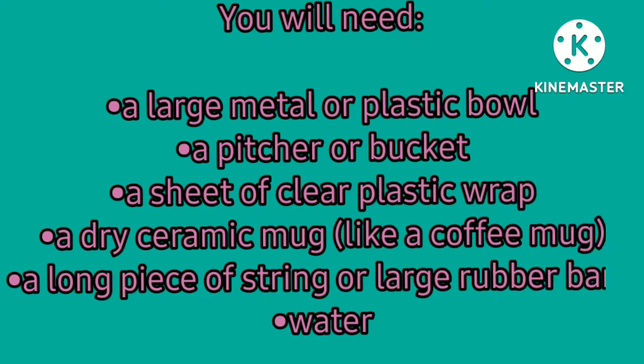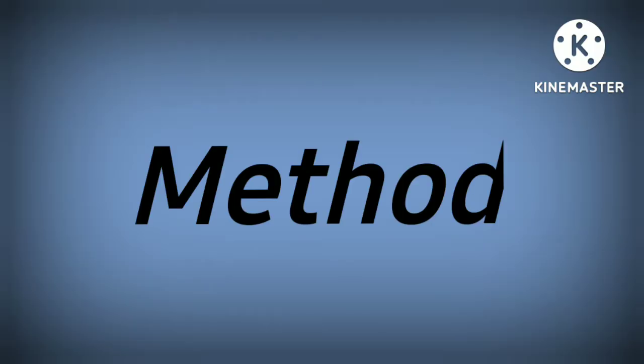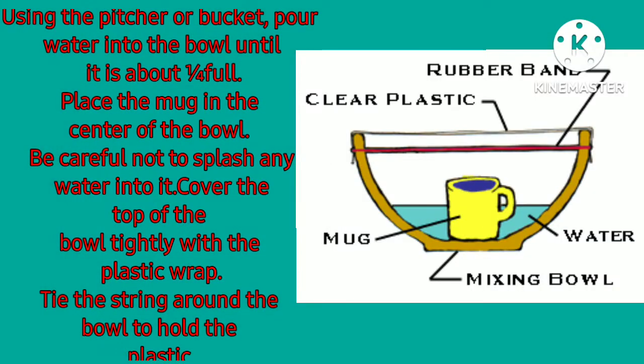To make your own mini water cycle, you will need: a large metal or plastic bowl, a bucket, a sheet of clear plastic wrap, a dry ceramic mug, a long piece of string or a large rubber band, and water. For the method, put the bowl in a sunny place outside.